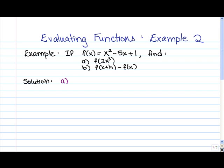Alright, so let's go ahead and have a look at the solution. For part a, first of all, we begin with f(x) = x² - 5x + 1, that's our function, and we want to find f(2x³). So everywhere there's an x in our function, we're going to replace with 2x³. So we have (2x³)² - 5(2x³) + 1. And again, all we've done is replace the x's with 2x³.